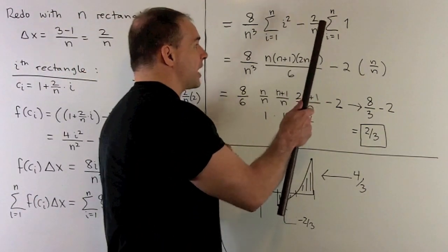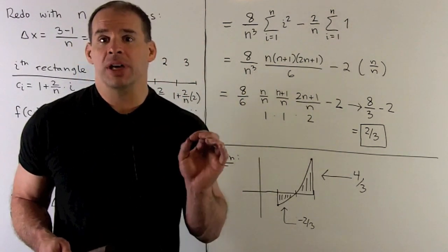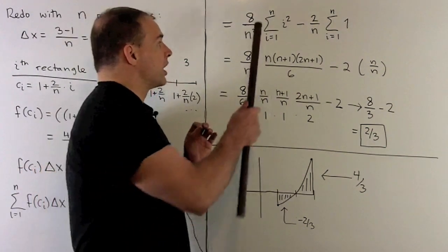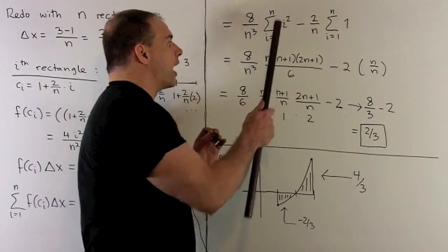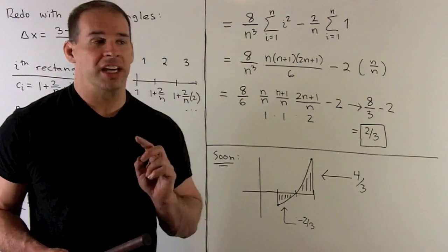Then, I'm left with the sum as i goes from 1 to n of 1. That just says add 1 to itself n times. So, we're going to get an n there. Now, for the sum as i goes from 1 to n of i squared, I look that up. That's n times n plus 1 times 2n plus 1 over 6.